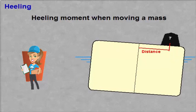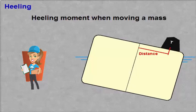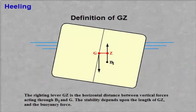When moving a mass out of the centre line of the ship, the ship will heel due to the heeling moment created by the moved mass. The heeling moment is dependent on the mass and moved distance. The righting lever GZ is the horizontal distance between vertical forces acting through B1 and G. The stability depends upon the length of GZ and the buoyancy force.